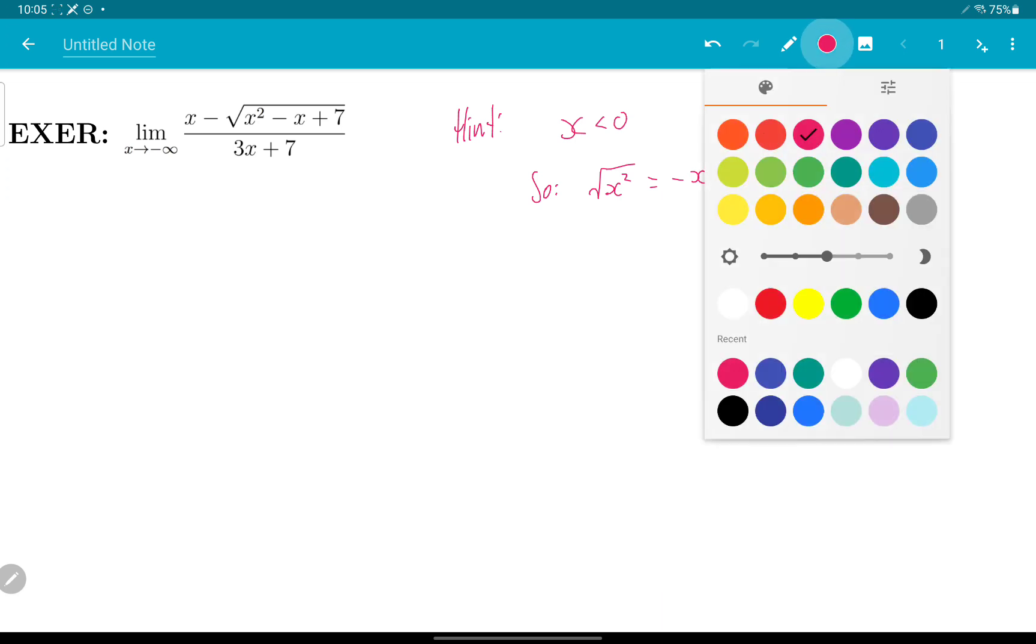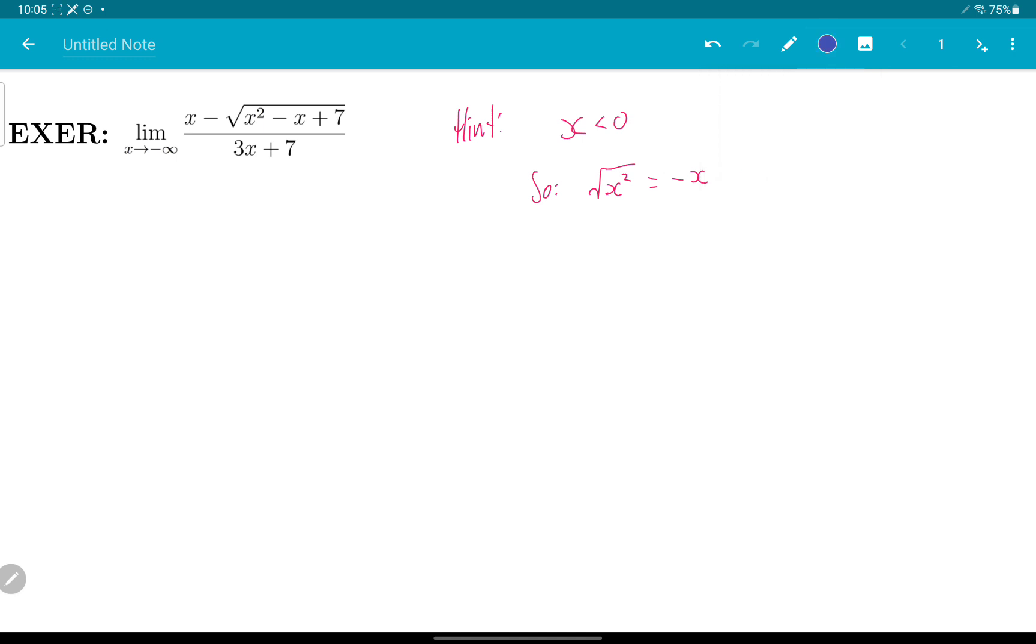So I'll give that a try, and here comes the solution. I factor x squared out of this expression, and I get x squared leaving behind 1 minus 1 over x plus 7 over x squared, all divided by 3x plus 7.